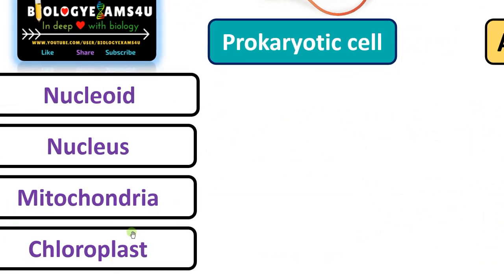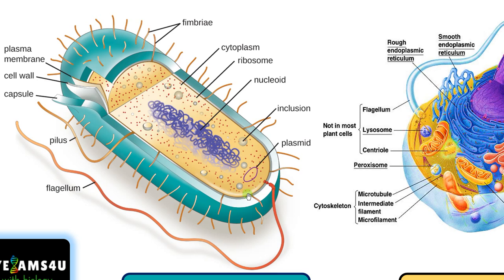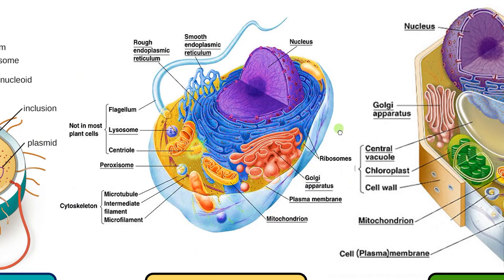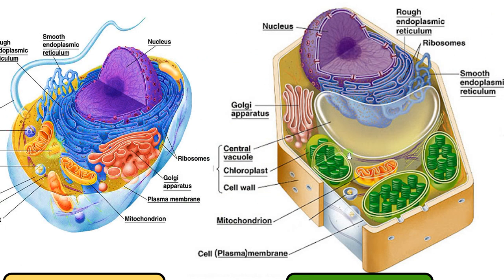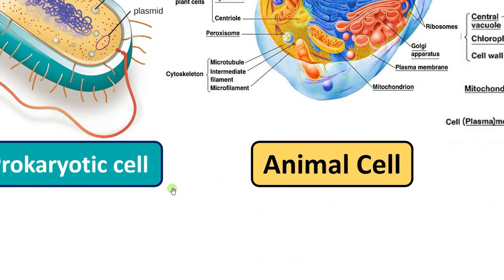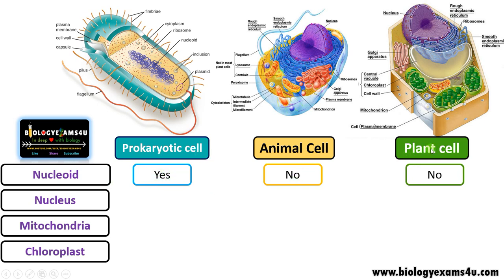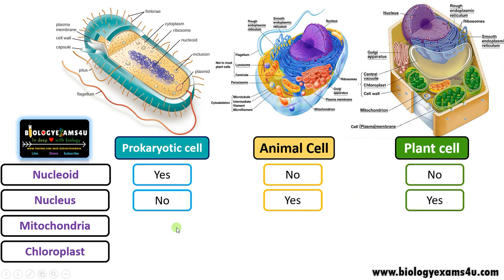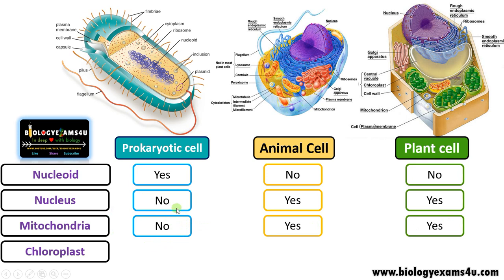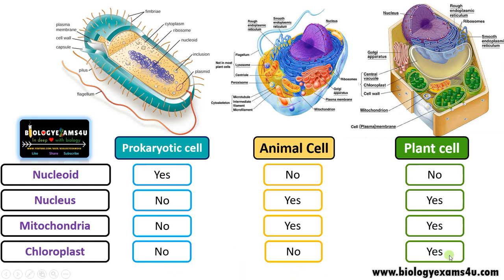The next structure is chloroplast. In prokaryotes, membrane-bound organelles are absent, therefore chloroplast is also absent. In animal cell, chloroplast is absent. Whereas in plant cell, chloroplast is present — it is a double membrane-bound organelle responsible for converting light energy into chemical energy, making plants the producers providing energy to all other organisms. Chloroplast is the site of photosynthesis. Summary: nucleoid is present in prokaryotic cell but absent in animal and plant cell; nucleus is present in animal and plant cell but absent in prokaryotic cell; chloroplast is absent in both prokaryotic cell and animal cell but present in plant cell.